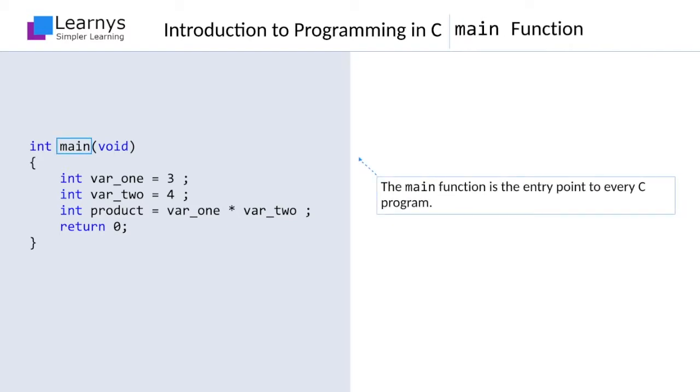The name of this function is main. It is a special type of function which every C program must have. The main function is the entry point to every C program. A program may be split in multiple files and have numerous other functions, but whenever the program is run, the execution will start from the main function.